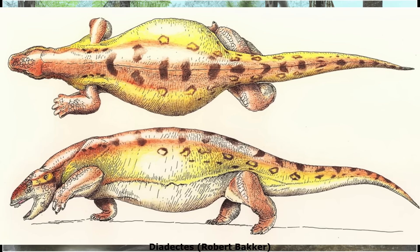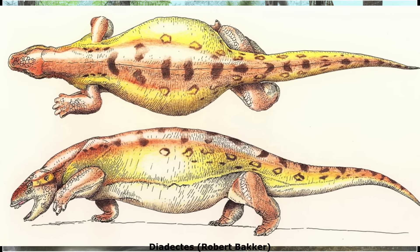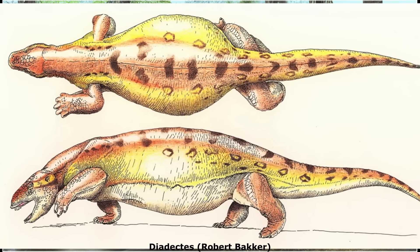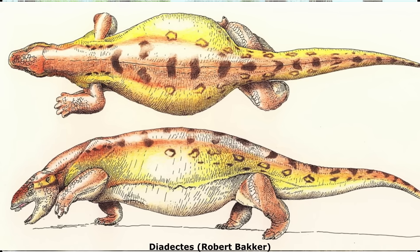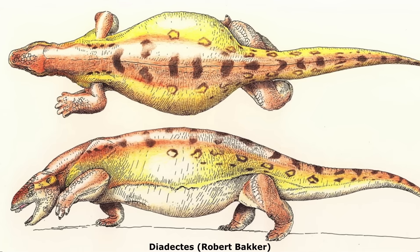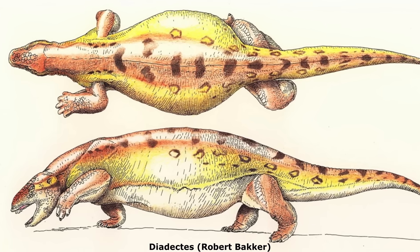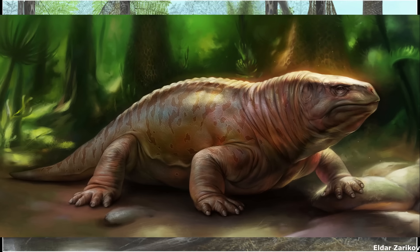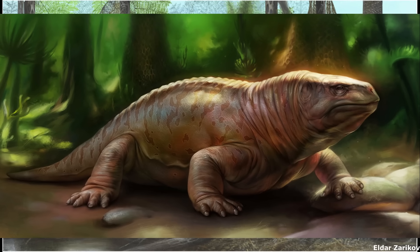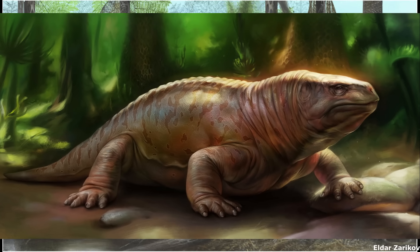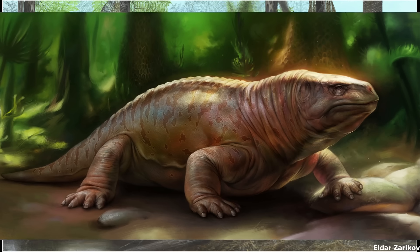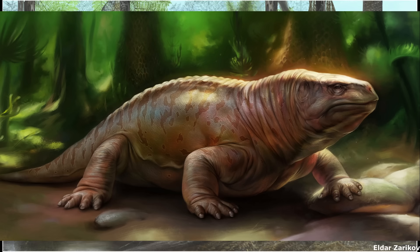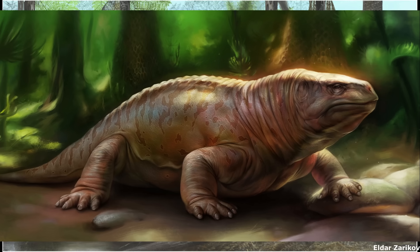By far the best-known member of the family was the genus Diadectes itself, present across the United States and Europe between 290 and 272 million years ago, being the largest and among the most derived diadectids. Producing up to six species, this three-metre or ten-foot-long genus was a heavily-built, chunky animal, with a thick-boned skull, heavy vertebrae and ribs, massive limb girdles and short, robust limbs.